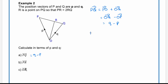For part b, the vector PR. We've been told R is a point on PQ such that PR is double RQ. So the line PQ is broken into three equal parts and PR covers two of them. Therefore PR equals two thirds of PQ, which is two thirds of (q minus p).